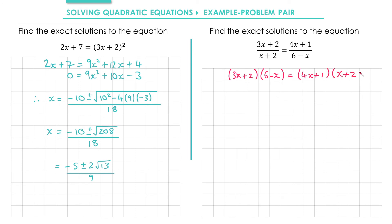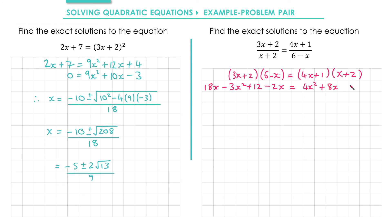That first step was called cross multiplying. Next I'm going to expand out the brackets on both sides. 3x times 6 is 18x; 3x times minus x is minus 3x squared; 2 times 6 is 12; and 2 times minus x is minus 2x. On the right: 4x times x is 4x squared; 4x times 2 is 8x; 1 times x is x; and 1 times 2 is 2.